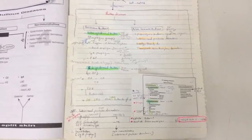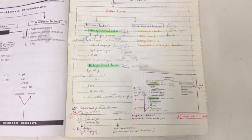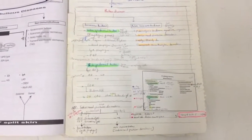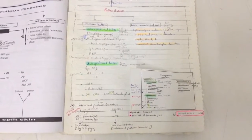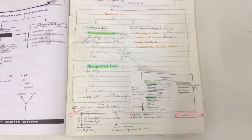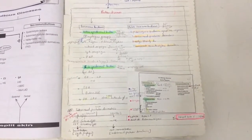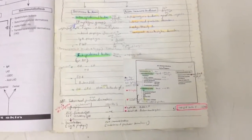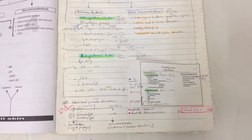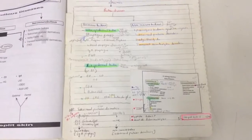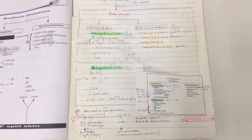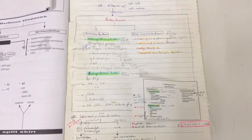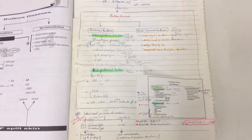In any case, both subcorneal pustular dermatosis and IgA pemphigus are best treated with Dapsone. Another classification of sub-epidermal bullae is according to the inflammatory cells present.